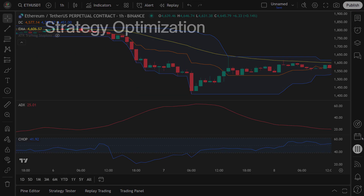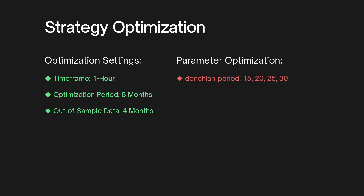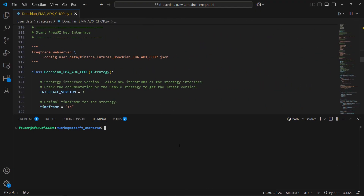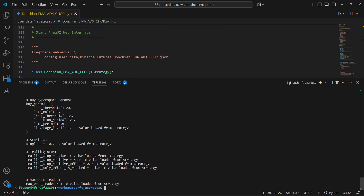Now that we understand the strategy, let's move on to optimization using FreqTrade. We'll test on the one-hour time frame and split the data into in-sample, 8 months for tuning the strategy, and out-of-sample, 4 months for testing on unseen data. The key parameters we'll focus on optimizing include: Donchian period, EMA period, ADX threshold (minimum ADX to confirm a strong trend), chop threshold (maximum Choppiness Index to identify trending markets), and ATR multiplier (which sets the ATR-based trailing stop distance). We'll use FreqTrade's Hyperopt feature to find the best combination of these parameters, then run a full backtest to see how the strategy performs with the best parameters in place.